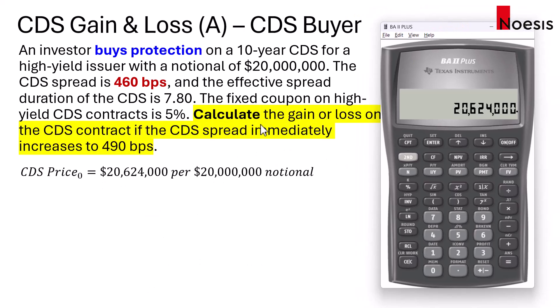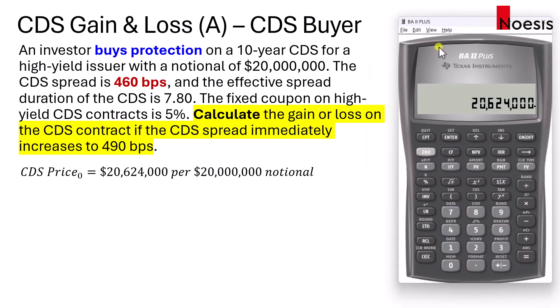Now let's move on to the next part. Given the same contract and the same investor, calculate the gain or loss on the CDS contract if the CDS spread immediately increases to 490 basis points.